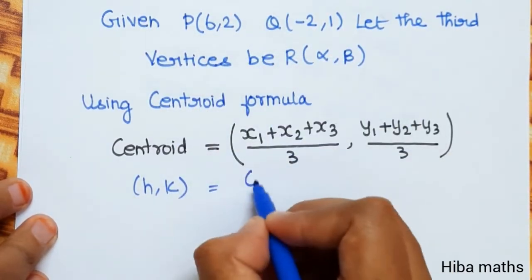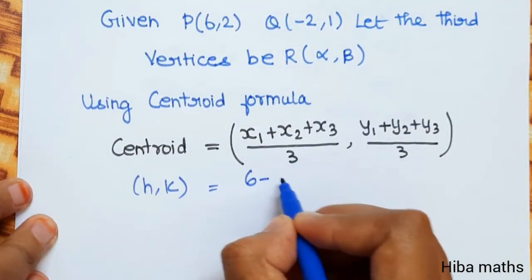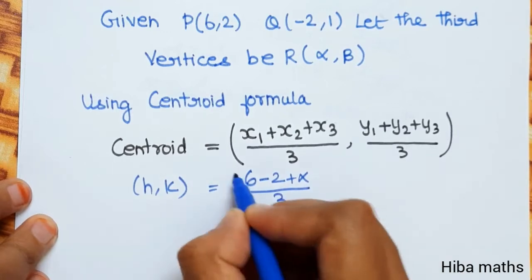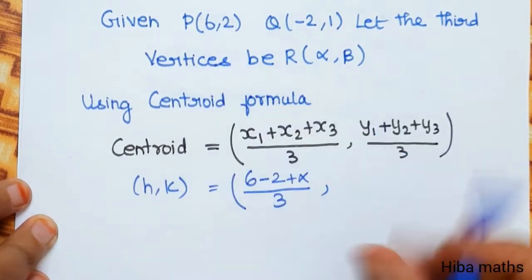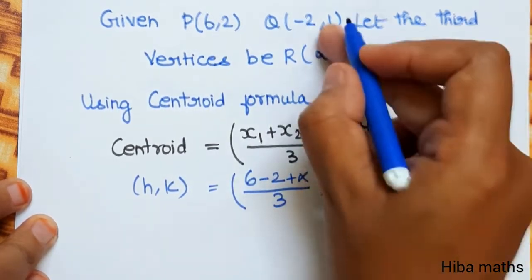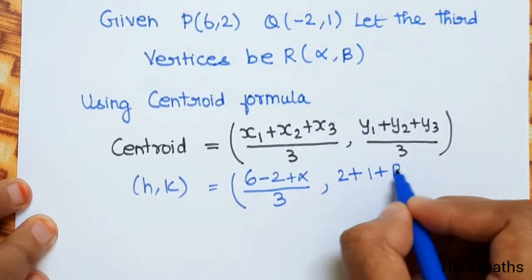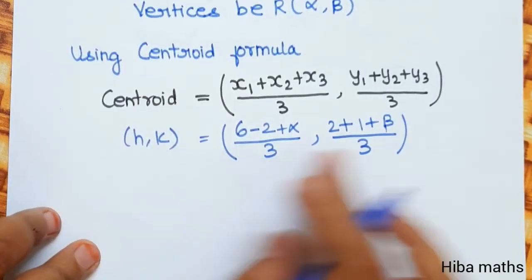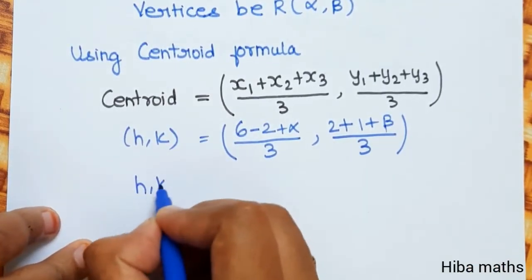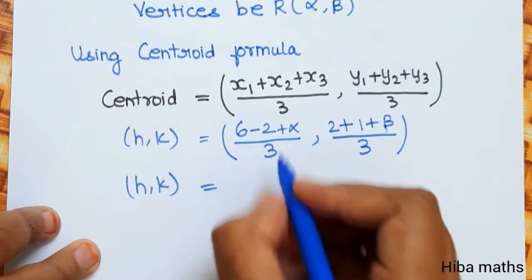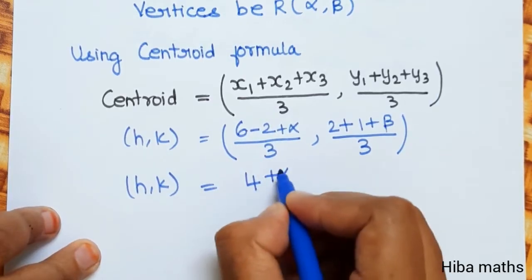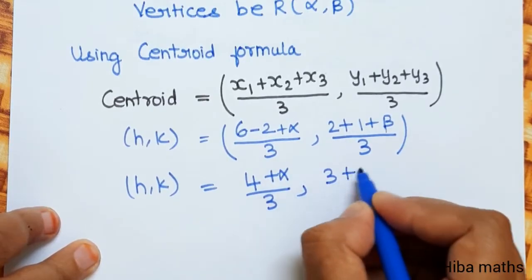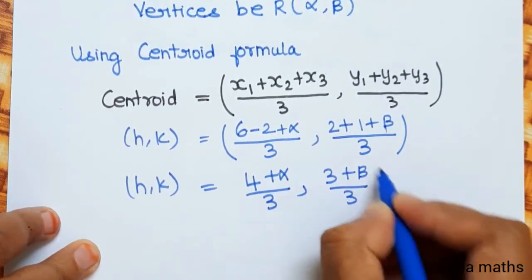Substituting the values: H = (6 + (-2) + α) / 3, and K = (2 + 1 + β) / 3. Simplifying, H = (4 + α) / 3, and K = (3 + β) / 3.